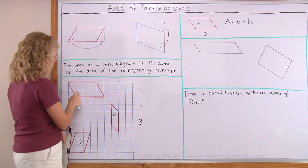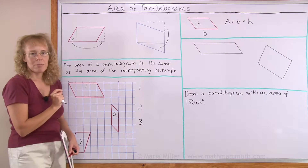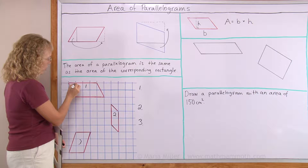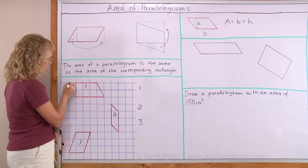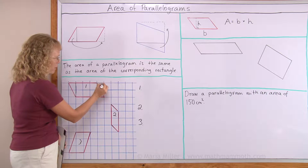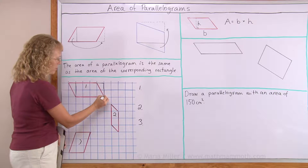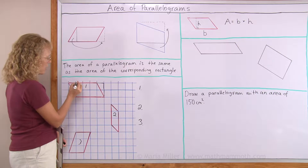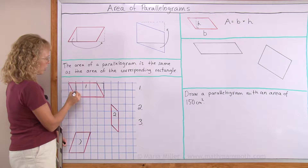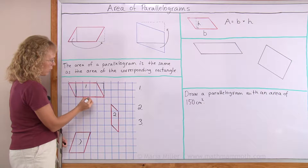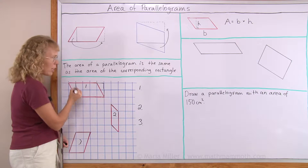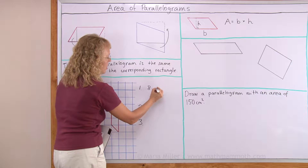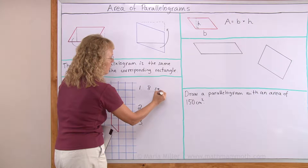Let's try to find the area of this parallelogram here in the grid using that idea. I'll cut off this triangle here and move it over there. So my rectangle goes from here to here — it is two units here and then four units that way. Four times two is eight. Its area is eight square units.